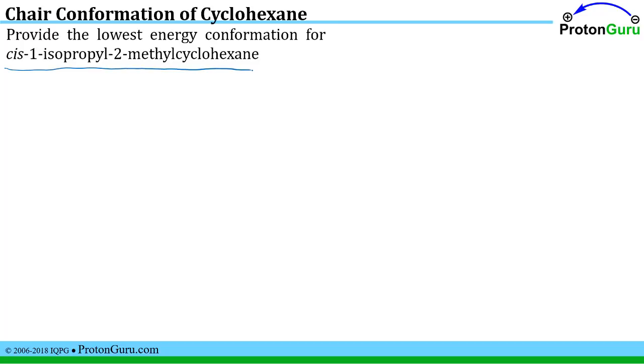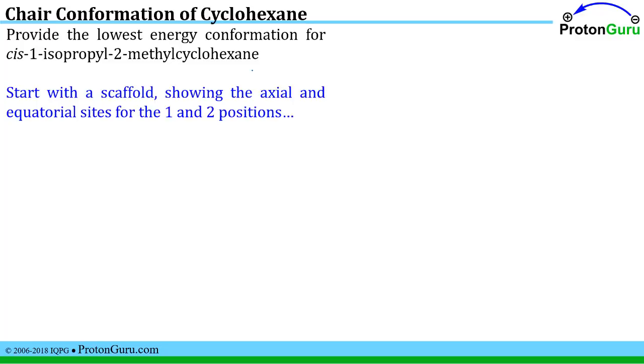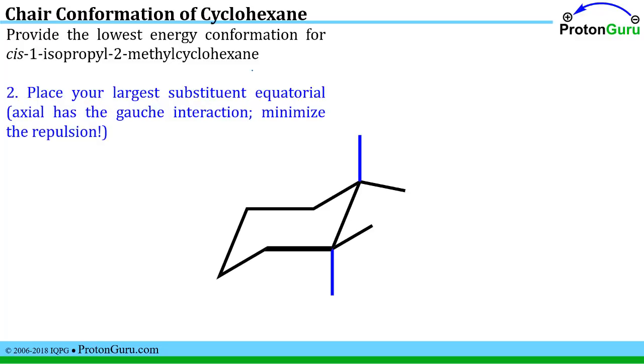And you'll start this out kind of the same way. You want to start off with a scaffold showing the axial and equatorial sites that are on the one and two positions. Now it doesn't matter what you number position one, you could have studied one and two there. But for me it's pretty easy to see where the substituents should be on positions one and two. So I usually use those.